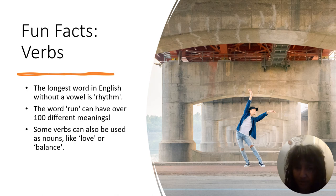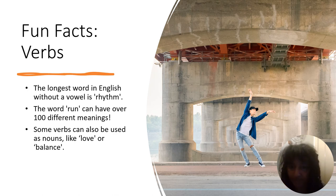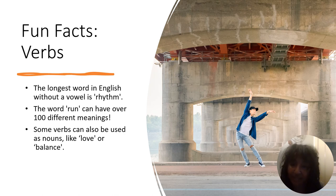Here are some fun facts about verbs. Did you know that the longest word in the English language without a vowel is the word rhythm? The word run can have over 100 different meanings. And some verbs can also be used as nouns — words like love and balance. For example, 'I love my mom' — love there is a verb because it's giving the action. But 'love is the way they like to show affection' — love in that sentence is called a noun.